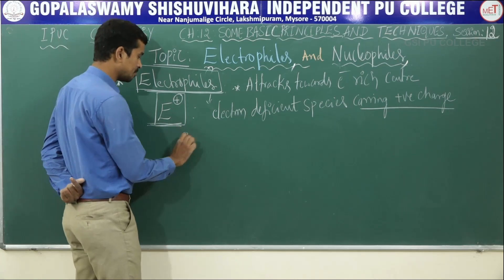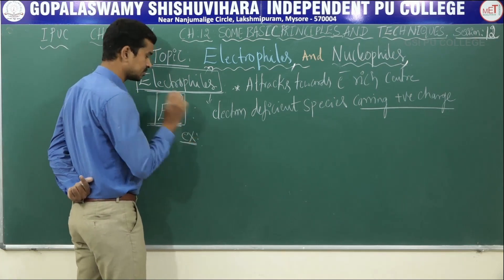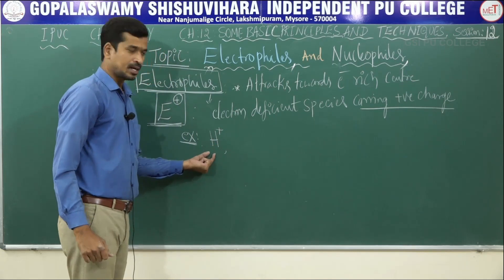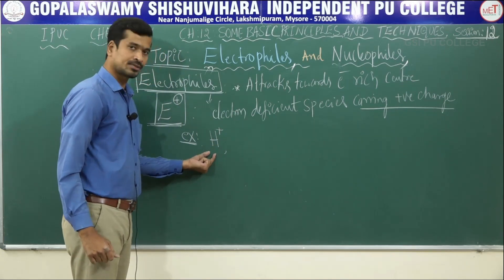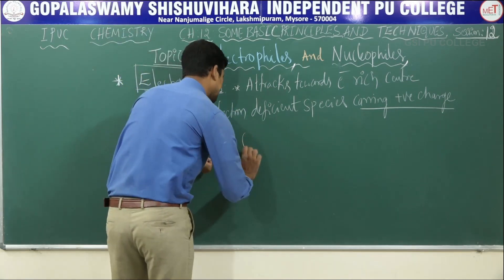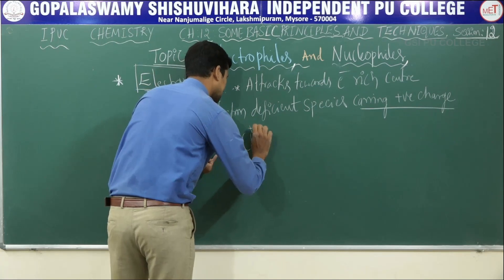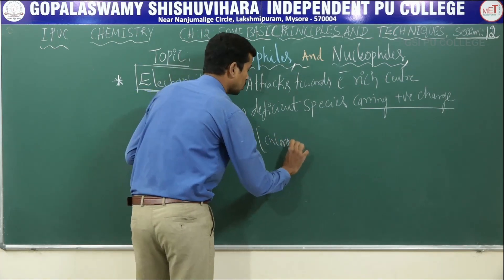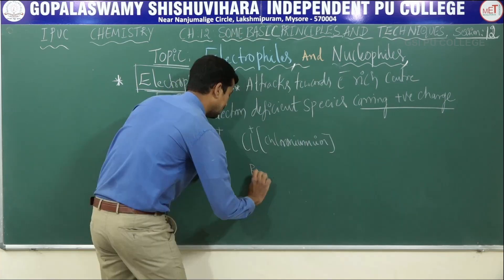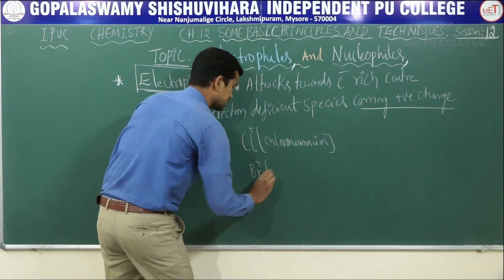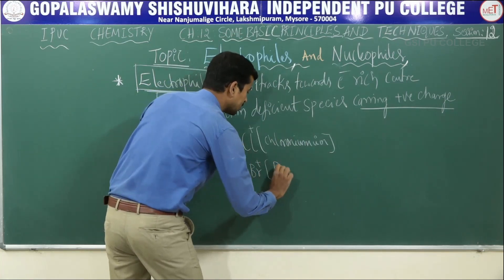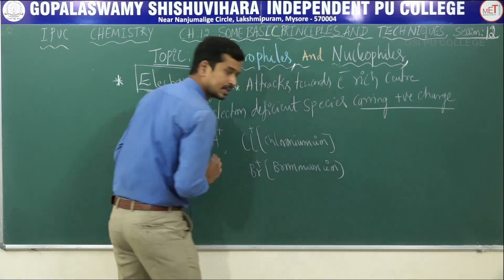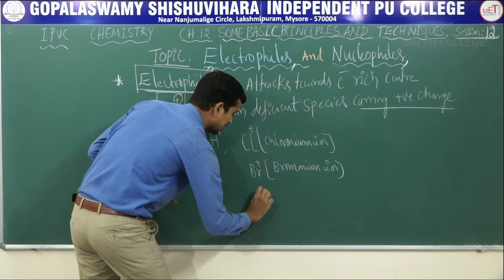What are the examples of electrophiles? H+ — proton or protein ion. Cl+ — chloronium ion. Br+ — bromonium ion. These are examples of positively charged electrophiles.